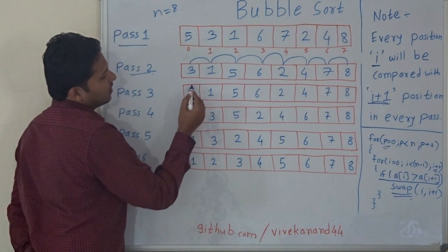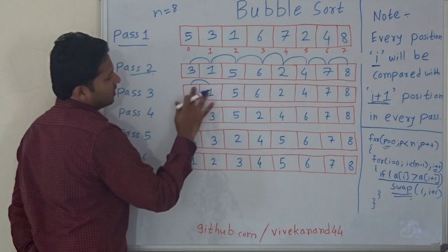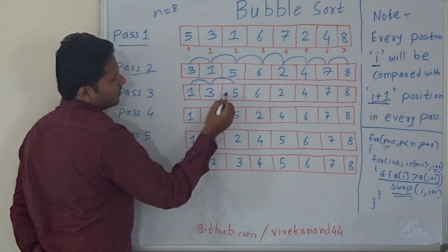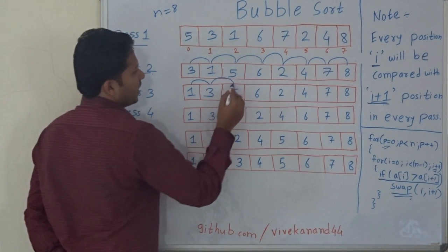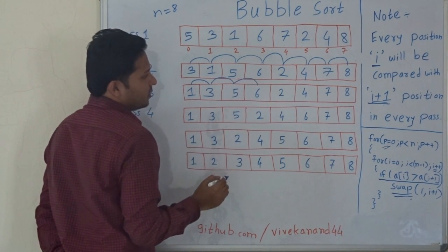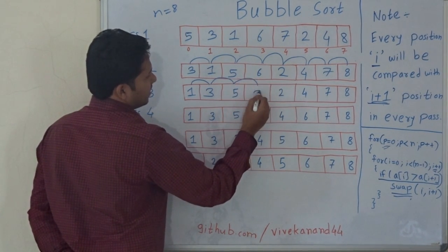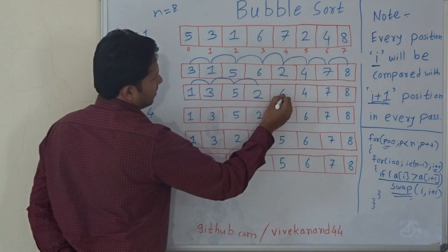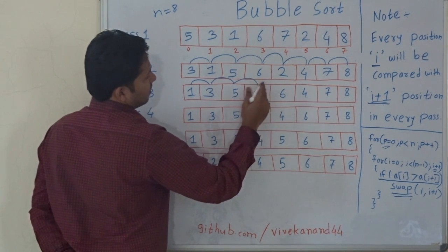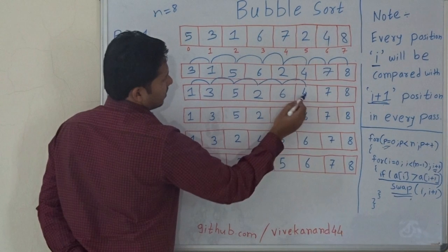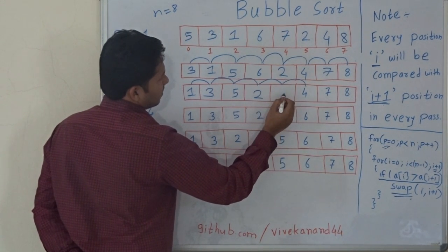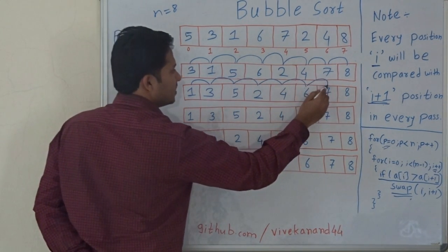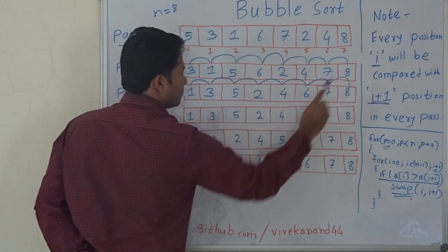Compare 3 with 1 — yes, swap needed, so 1 and 3 are swapped. Compare 3 with 5 — no swap. 5 with 6 — no swap. 6 with 2 — yes, swap needed. Compare 6 with 4 — yes, swap needed. Compare 6 with 7 — no swap. Compare 7 with 8 — no swap.